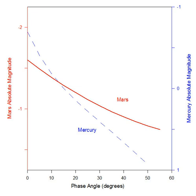Some of these early data were analyzed by G. de Vacallors, summarized by D. Harris, and used for predicting apparent magnitudes in the Astronomical Almanac for several decades.